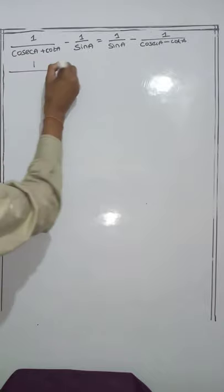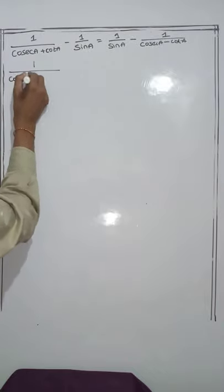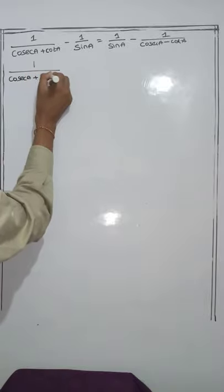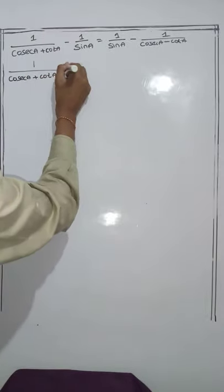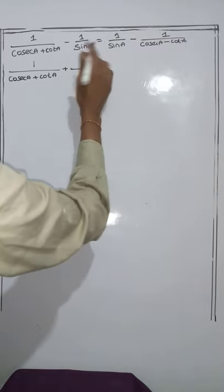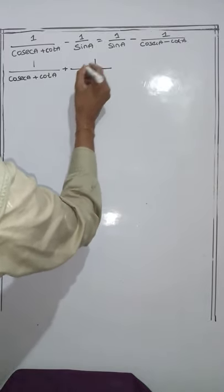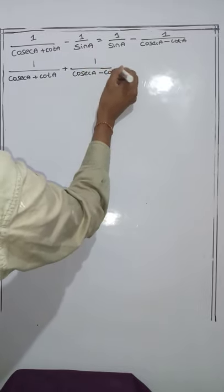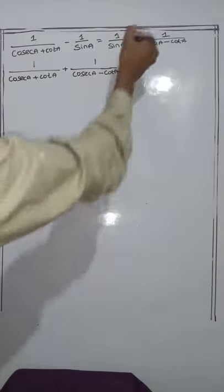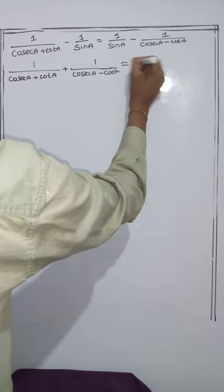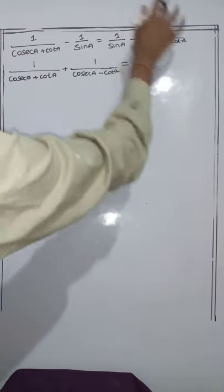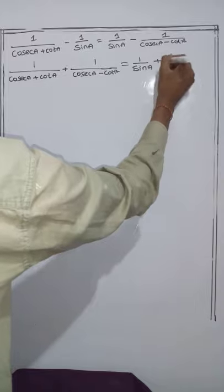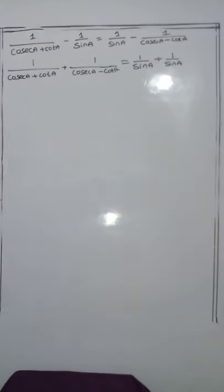Therefore, the first term is 1 by cosec A plus cot A. This minus comes to this side and becomes plus 1 by cosec A minus cot A. The denominator sign won't change — only the fractional sign will change. Minus sin comes to this side, and this minus 1 by sin A becomes plus 1 by sin A.